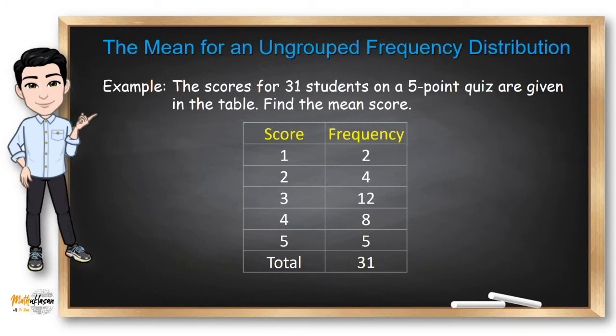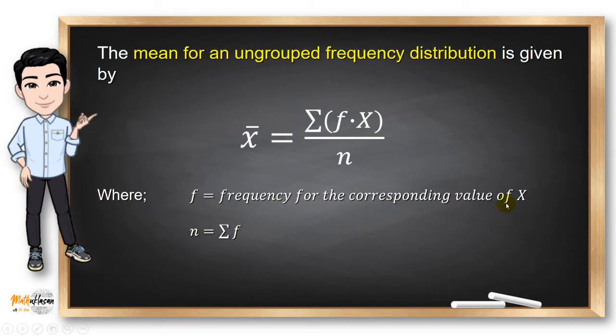Now what if we need to find the mean for an ungrouped frequency distribution like this example? The scores for 31 students on a five-point quiz are given in the table. Find the mean score of this frequency distribution. The formula that we will be needing is x̄ equals summation of f times x over n.